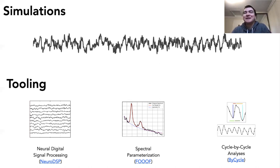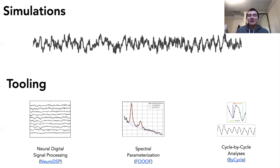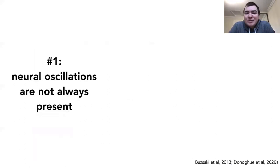I'm going to run through a list of seven topics — things we should be thinking about when studying neural oscillations. It's somewhat review style, so I won't dwell on them too long, but if anyone wants to dig into any particular one, feel free to call it out. Let's start with number one, which is very related to my main work in spectral parameterization.